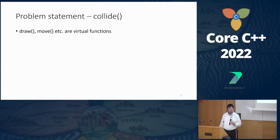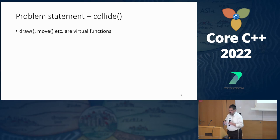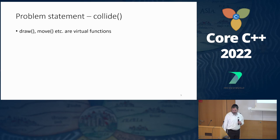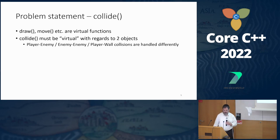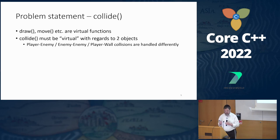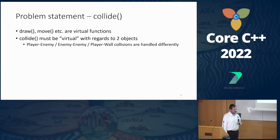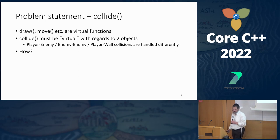Almost everything we saw was handled by virtual functions — we know how to implement them, we love them or we hate them, but they are still useful in various contexts. What about 'collide'? Collide must choose a different implementation based on two types, not only one — the dynamic type of two objects that have collided. If a player collides into an enemy, the reaction is very different than an enemy-to-enemy collision. The language doesn't have a direct solution to that.